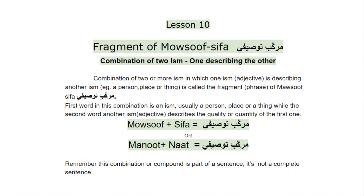But this time, this fragment that we are learning is Masuf Sifa. It's a combination of two ism, but in these two isms, the relationship between them is that one describes the other one.